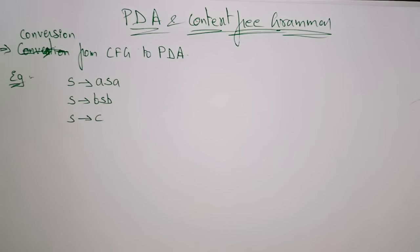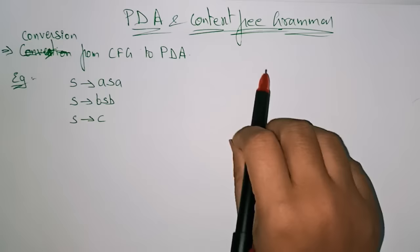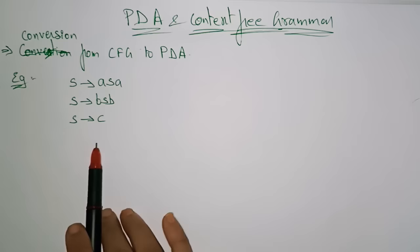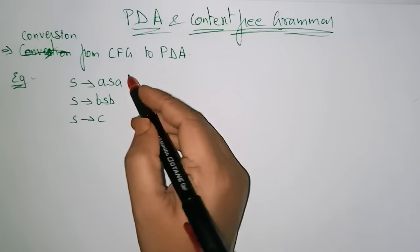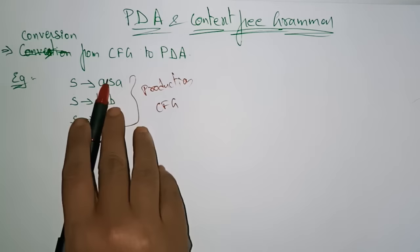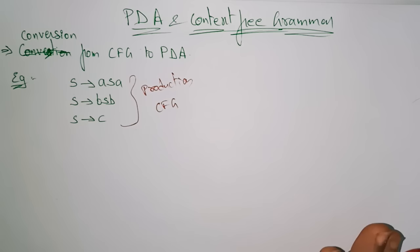Hi students, coming to the next topic: Pushdown Automata and Context-Free Grammar. Before seeing this video, you need to know what context-free grammar and pushdown automata are. I hope you understand CFG and PDA. Now let's see how we are going to convert a given context-free grammar to pushdown automata. This is a given grammar — the production rules are: S produces aSa and bSb and c. Here a, b, c are terminals and S is a non-terminal.